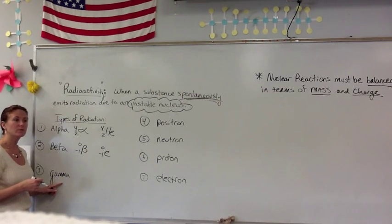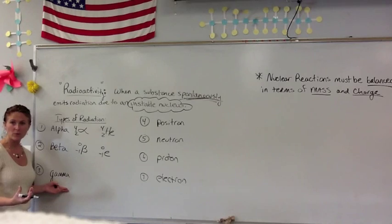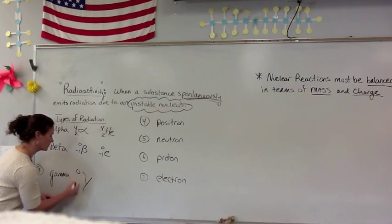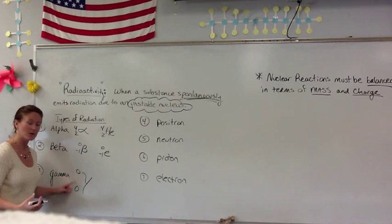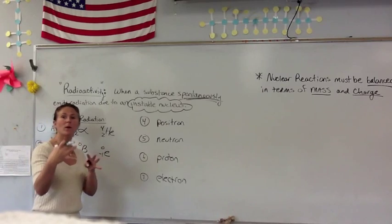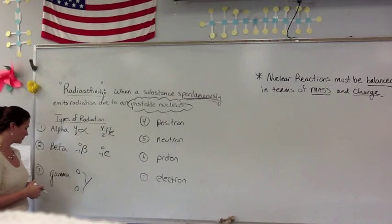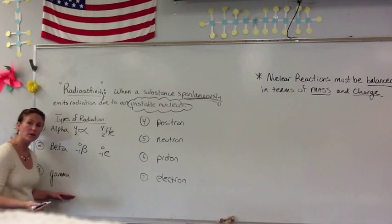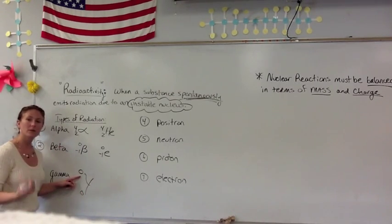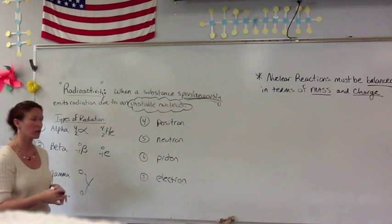A gamma ray is a high-speed photon. It has absolutely no mass and no charge, but it is given off when the nucleus actually transforms from a higher energy state to its ground state. So gamma radiation has zero mass and zero charge, given off when that nucleus goes from an excited state back down to its ground state.